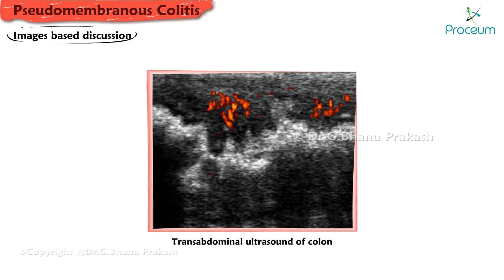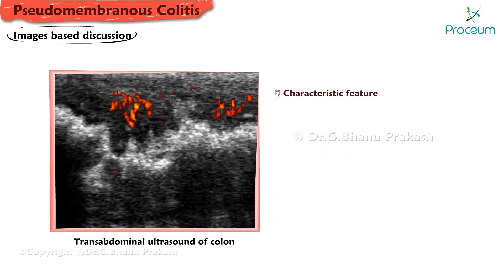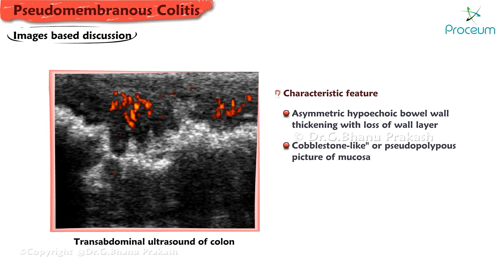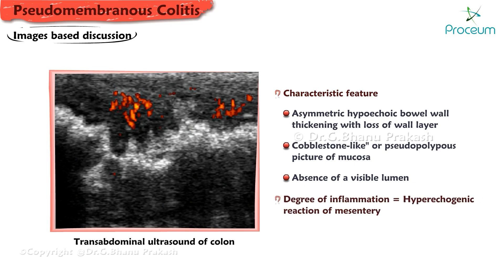Here is a transabdominal ultrasound of the colon in a patient with pseudomembranous colitis. A characteristic feature is asymmetric hypoechoic bowel wall thickening with loss of wall layer structure and a cobblestone-like or pseudopolypous picture of the mucosa in the absence of a visible lumen. Depending on the degree of inflammation, a hyperechogenic reaction of the mesentery may also be seen.